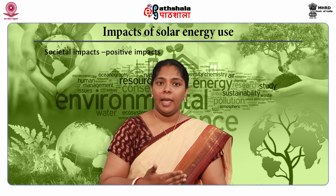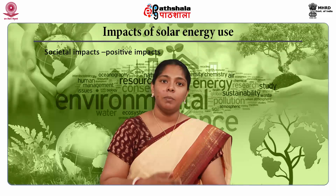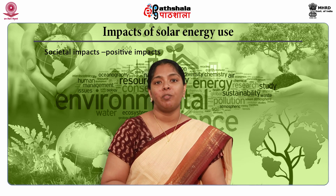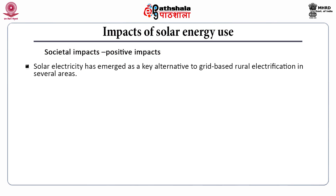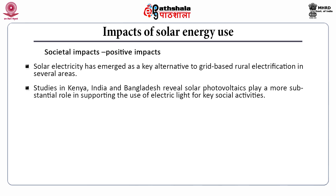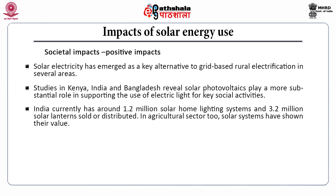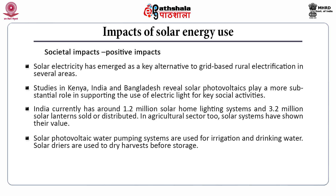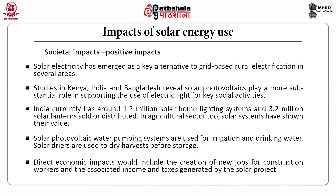There are positive societal impacts from solar energy. Solar power is a boon in areas not yet reached by electricity, seen in several developing countries, and has emerged as a key alternative to grid-based rural electrification. Studies in Kenya, India and Bangladesh revealed solar photovoltaics play a substantial role in supporting electric light for key social activities. India has around 1.2 million solar home lighting systems and more than 3.2 million solar lanterns sold or distributed. In agriculture, solar photovoltaic water pumping systems are used for irrigation and drinking water, and solar dryers are used to dry harvest before storage. Direct economic impacts include creation of new jobs and associated income and taxes generated by solar projects.